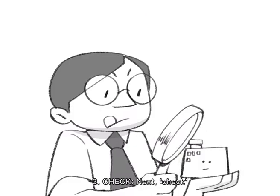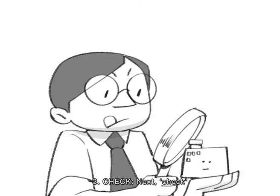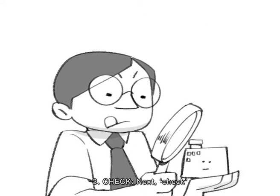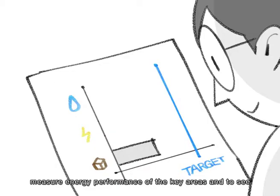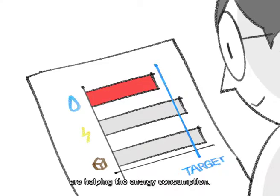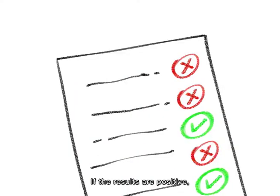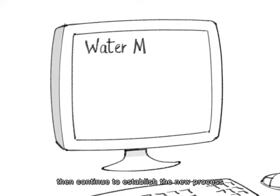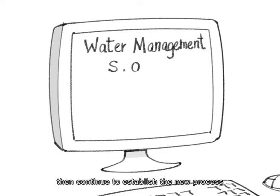Three, Check. Next, check and measure energy performance of the key areas to see if the implemented activities in the plan are helping the energy consumption. If the results are positive, then continue to establish the new process as your formal standard operating procedures (SOP).